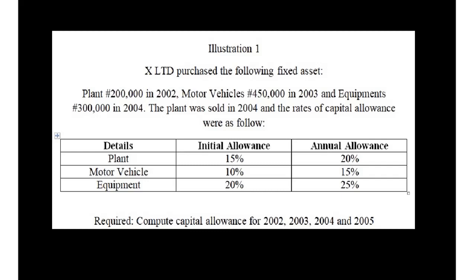Now let's look at this illustration on capital allowance — this is the second phase of our lectures. We have finished the analysis, so we want to use this illustration to put more meaning to what we are discussing. The question says S Limited purchased the following fixed assets: plant for 200,000 in 2002, motor vehicle for 450,000 in 2003, and equipment for 300,000 in 2004. The plant was sold in 2004, and whenever an asset is sold, there is either a balancing charge or a balancing allowance depending on the written-down value at the date of sale.